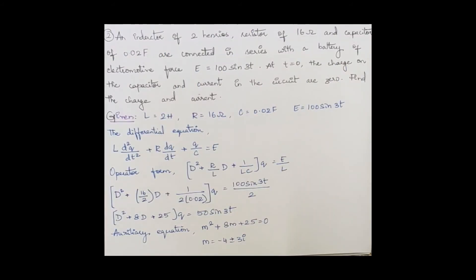Here's another sample. An inductor of 2 henrys, resistor of 16 ohm, and capacitor of 0.02 farad are connected in series with a battery of electromotive force E = 100sin(3t). At time t = 0, the charge on the capacitor and the current in the circuit are zero. Find the charge and the current. Here you have to observe that this is not a homogeneous equation.